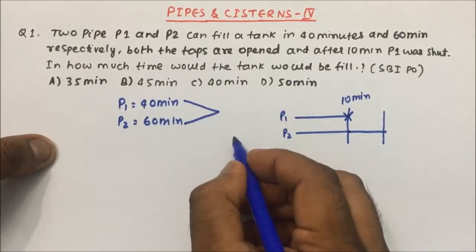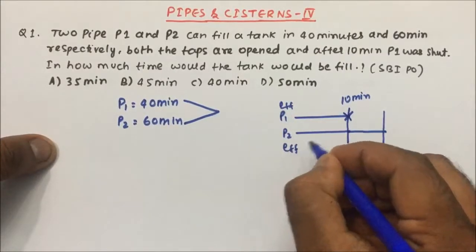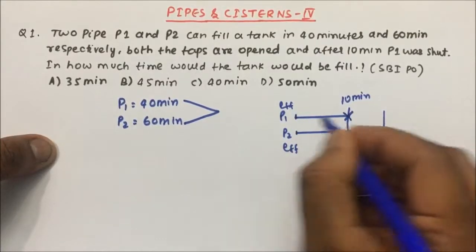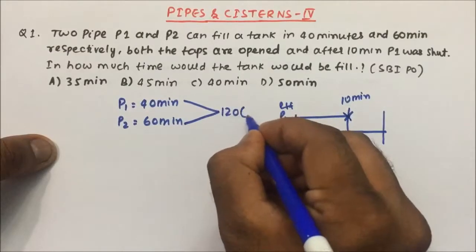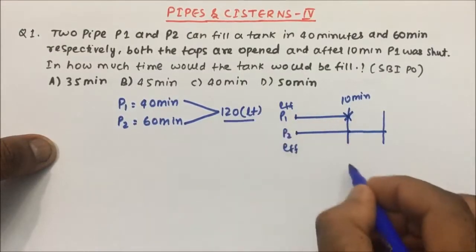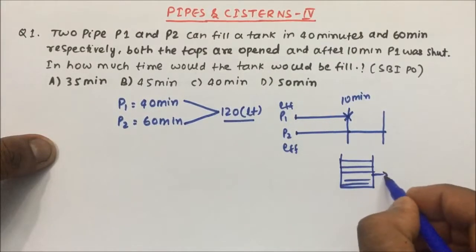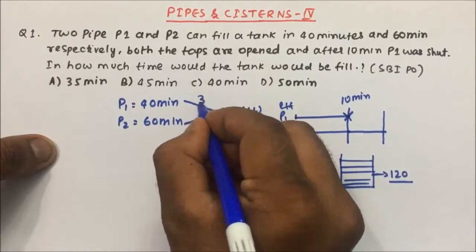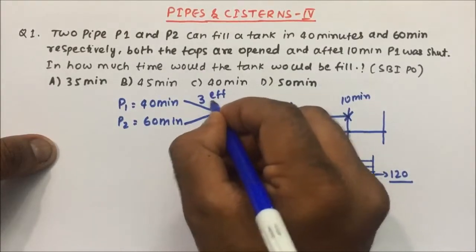We will take the LCM because we need the efficiency of pipe P1 and pipe P2 — that means how much water they can fill in one minute. The LCM of 40 and 60 is 120, and once we take the LCM, that becomes our capacity. So 120 liters is the capacity of the tank. 120 divided by 40 is 3, and 120 divided by 60 is 2.